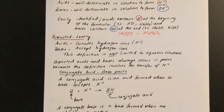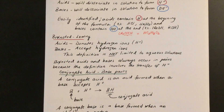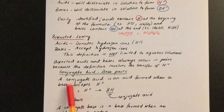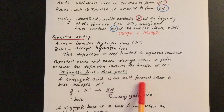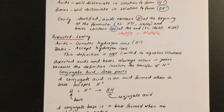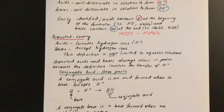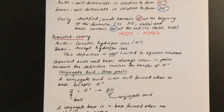Since the proton is being transferred from one substance — the acid — to the other — the base — we're going to have what is known as conjugate acid-base pairs. I'm going to go over this now and then again later. It's a simple concept but it's important for you to understand what is happening.